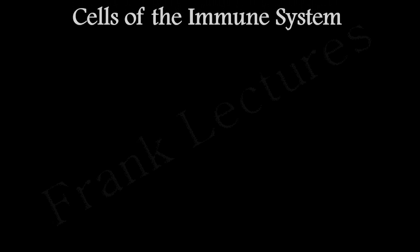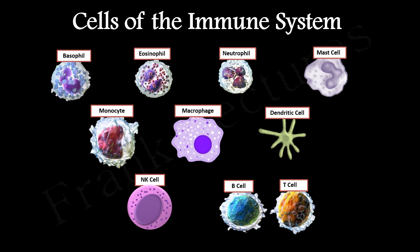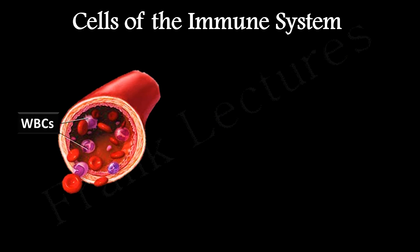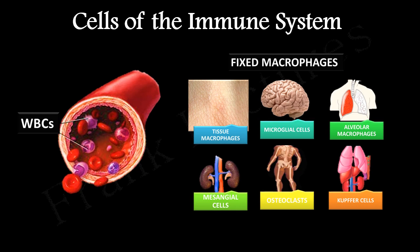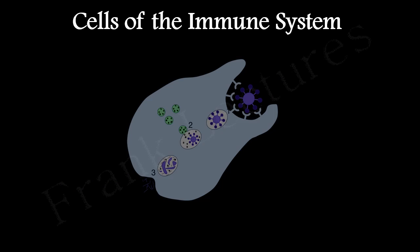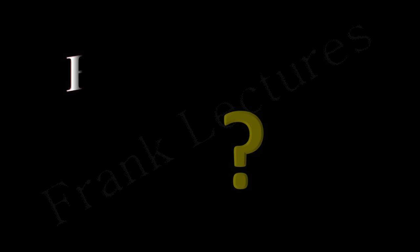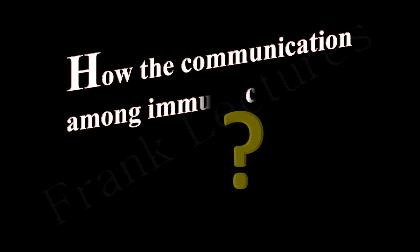In the last video lecture we covered cells of the immune system, which are widely dispersed in our body — some are circulating in blood, some in lymph, and some are resident in various tissues and organs. When these cells recognize a foreign invader, they interact with each other and work together to destroy or eliminate the pathogen. The question here is: how does communication among immune cells take place?